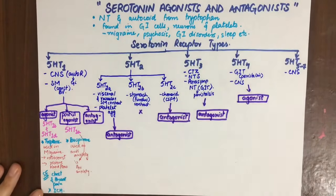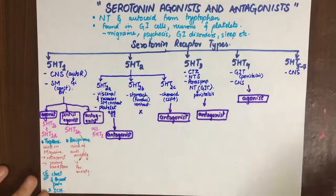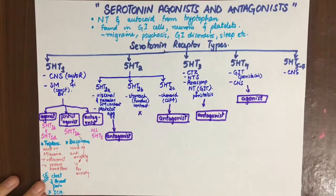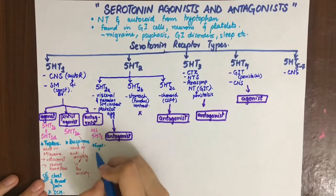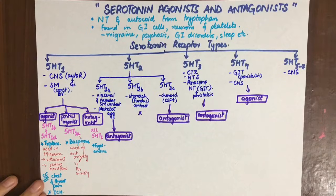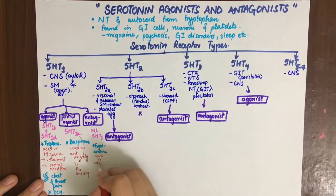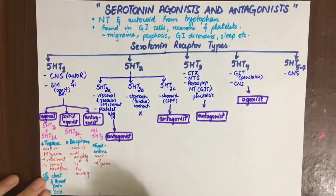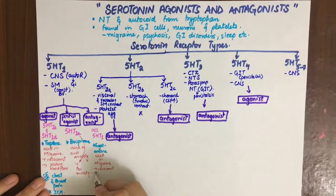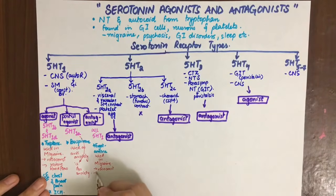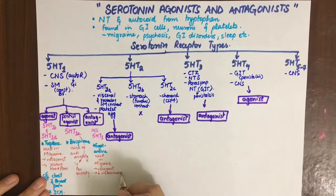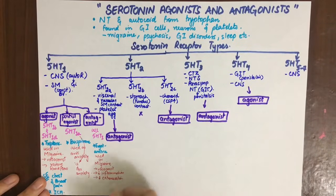The antagonist acts at all 5-HT1 receptor types, and it is mainly ergotamine. It is used in migraine. It is also a partial agonist. It causes vasoconstriction, decreased inflammation, and decreased extravasation of fluid. Its effect is enhanced with caffeine, which increases its absorption as well as its vasoconstrictive effect.